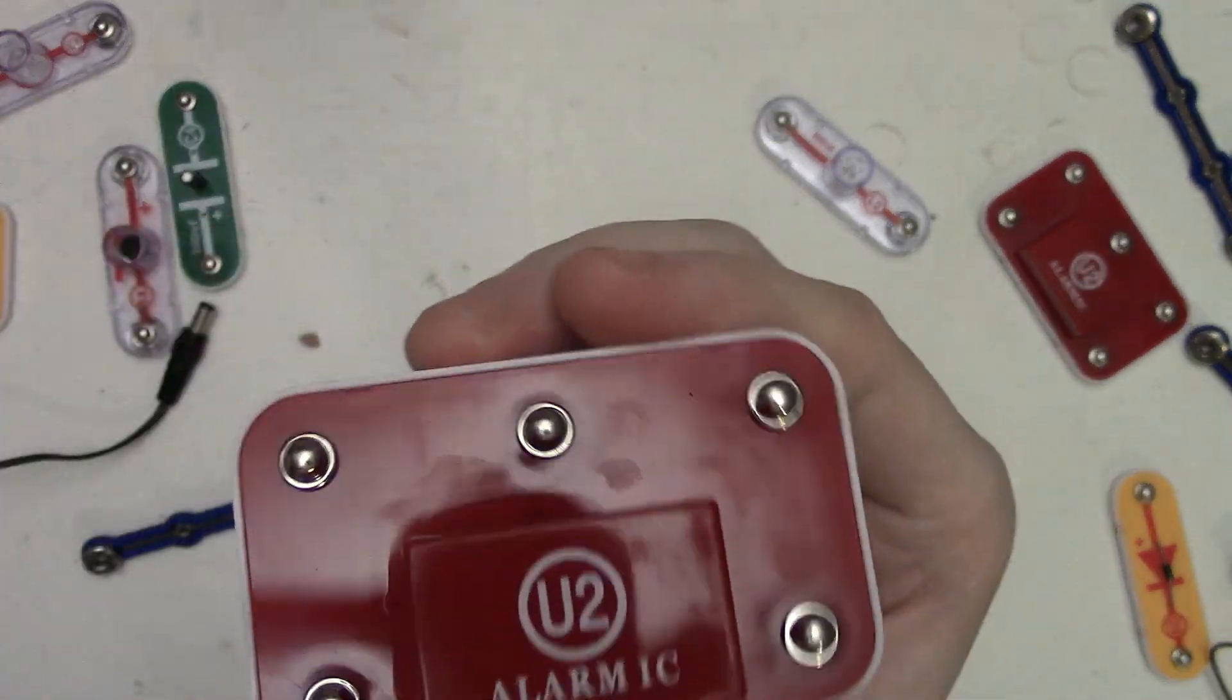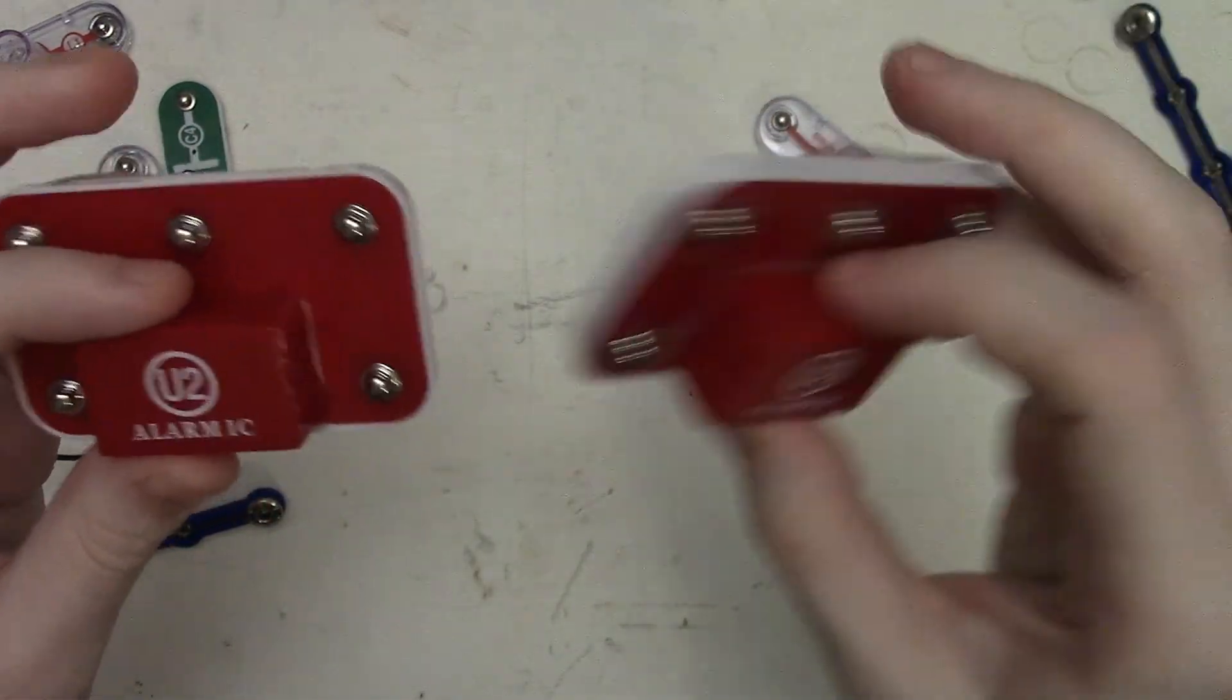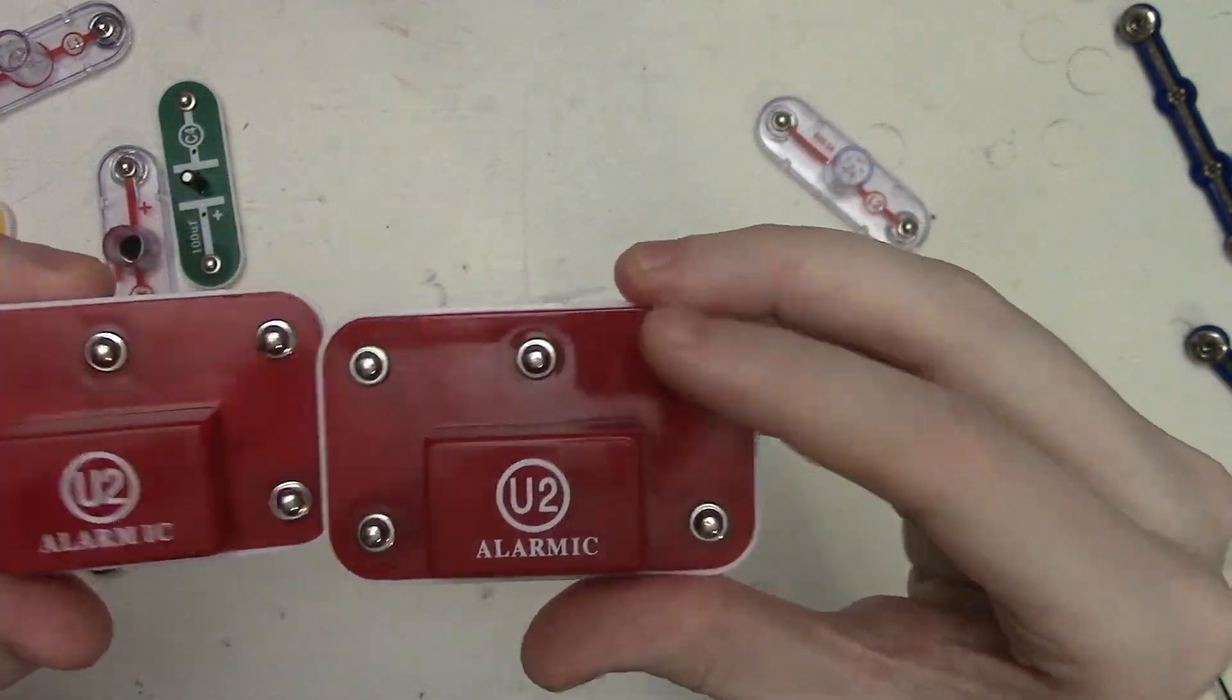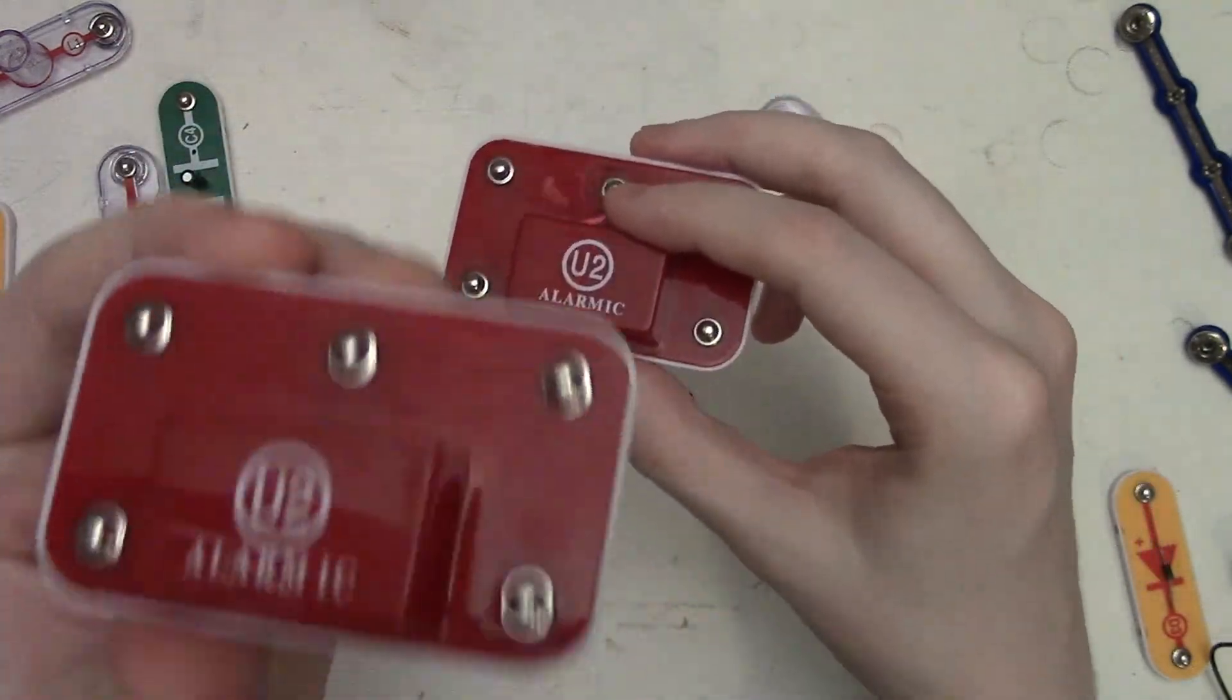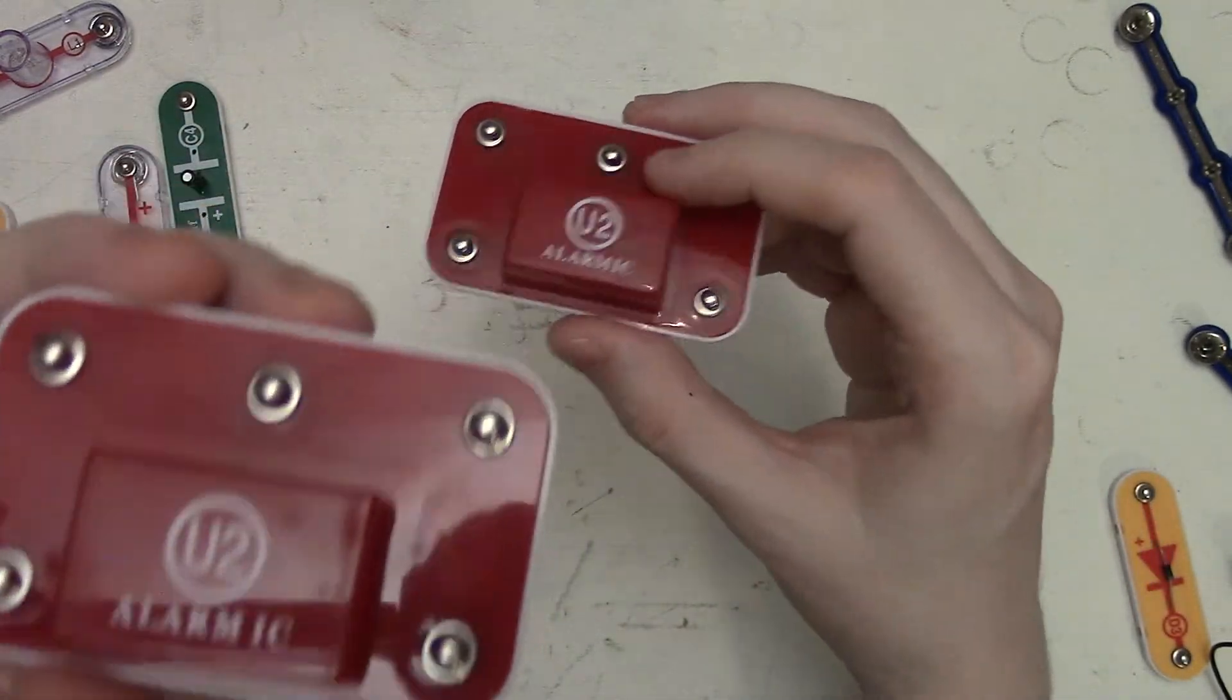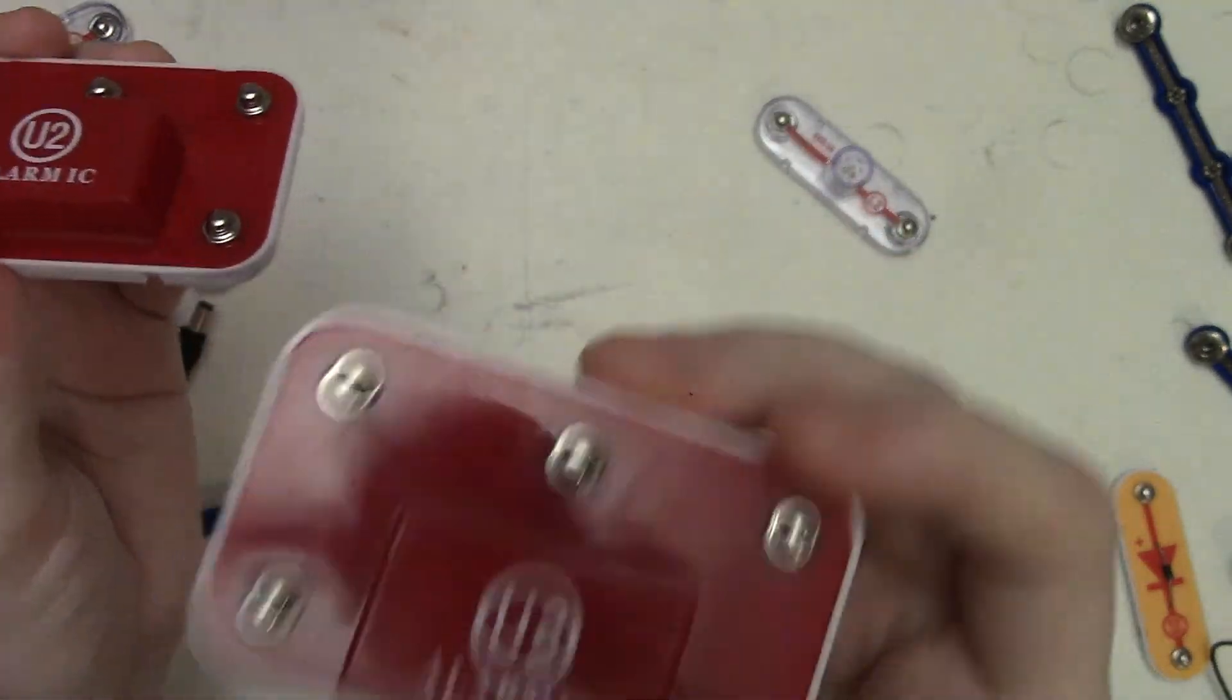And so the last new part is one that I showed before that needed replacing and that was the alarm IC. Because I had the original alarm IC here and well they pretty much look identical, there's nothing really different about it. But functionally the new one I got here works as it should because I've shown in previous projects this one here does not work correctly.